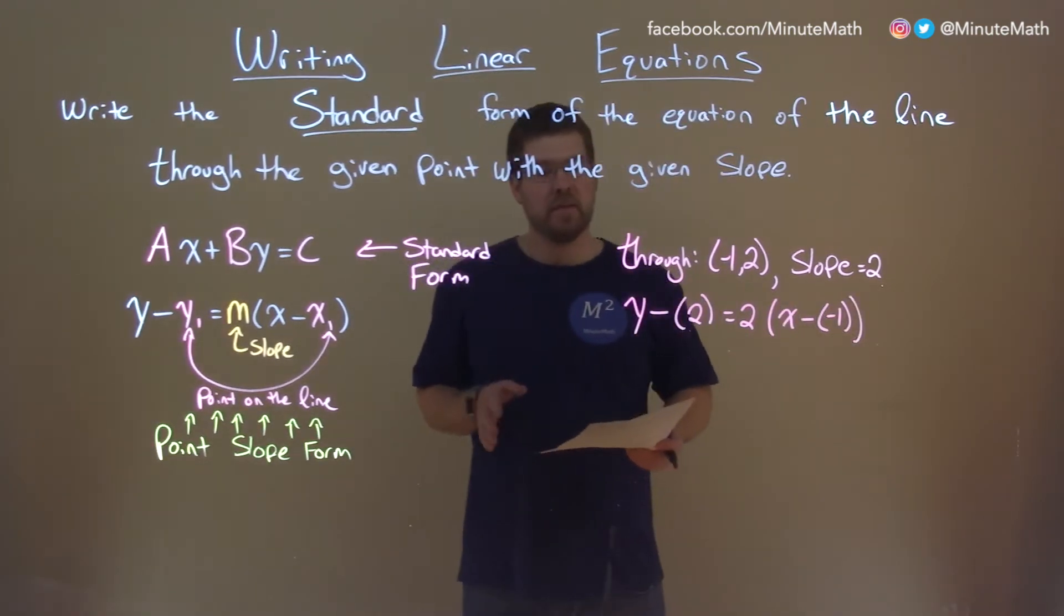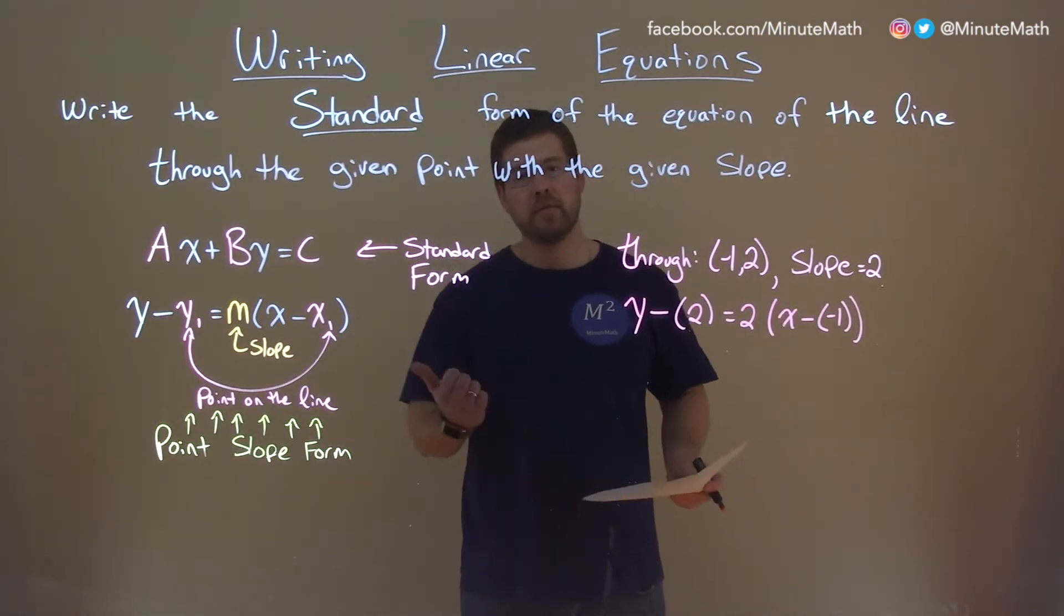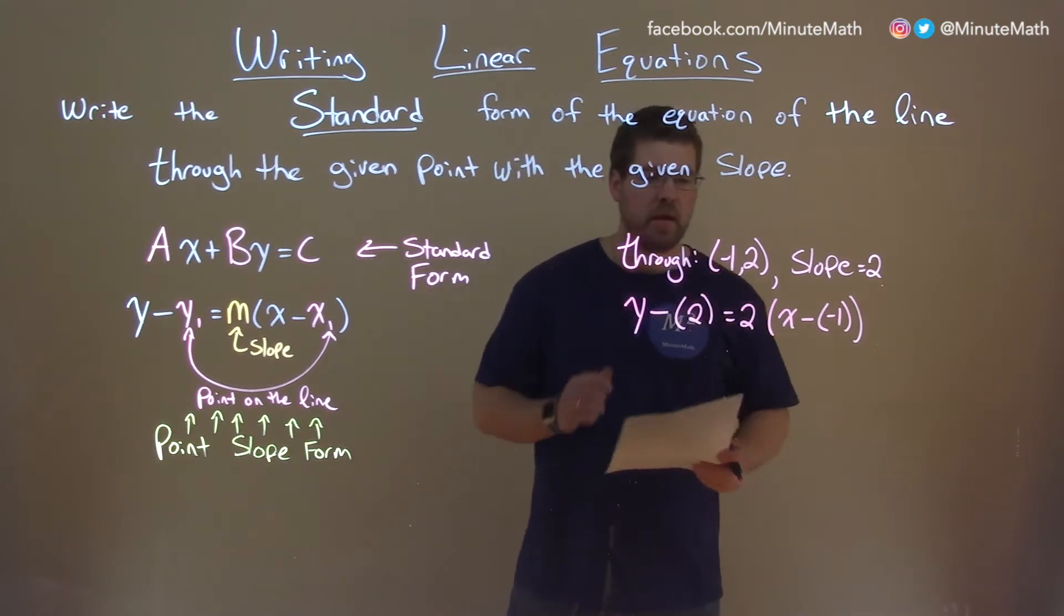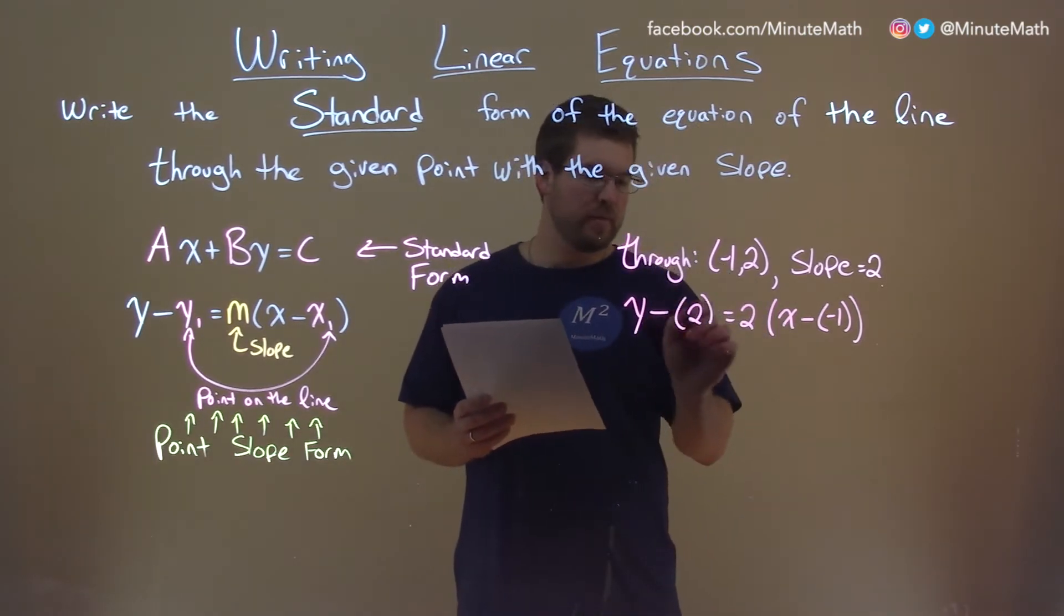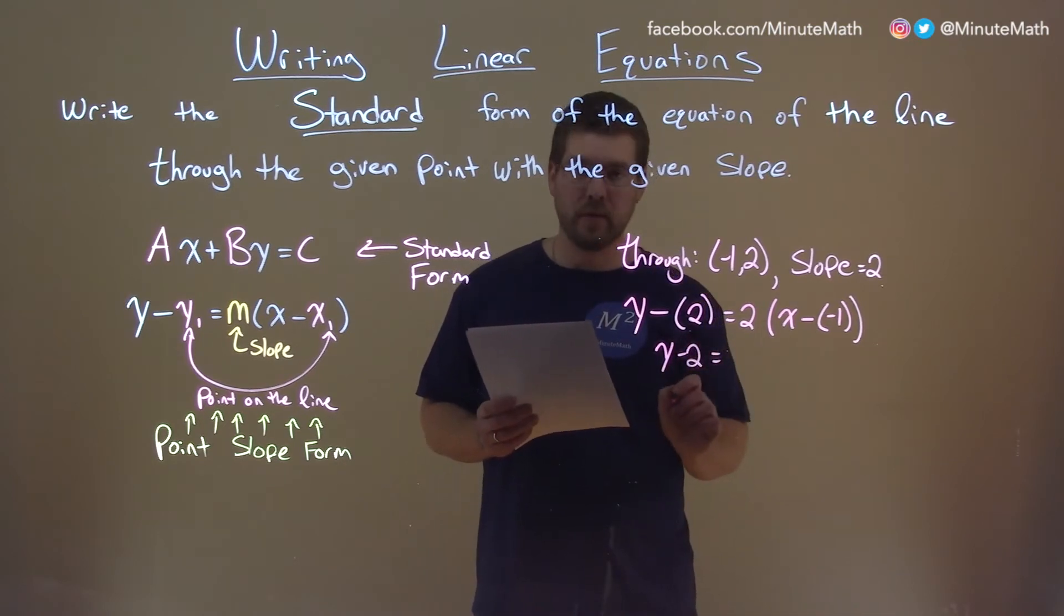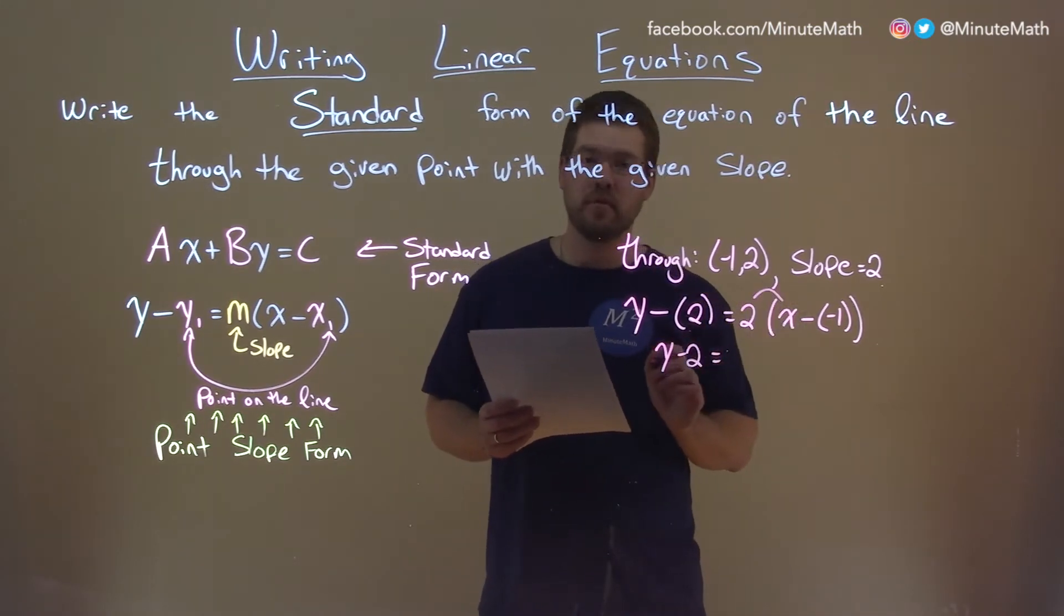Now let's simplify this and get the y's and x-values to the left, numbers to the right. So first way to do this, we can rewrite this as just y minus 2 without the parentheses. But then distribute the 2 here.